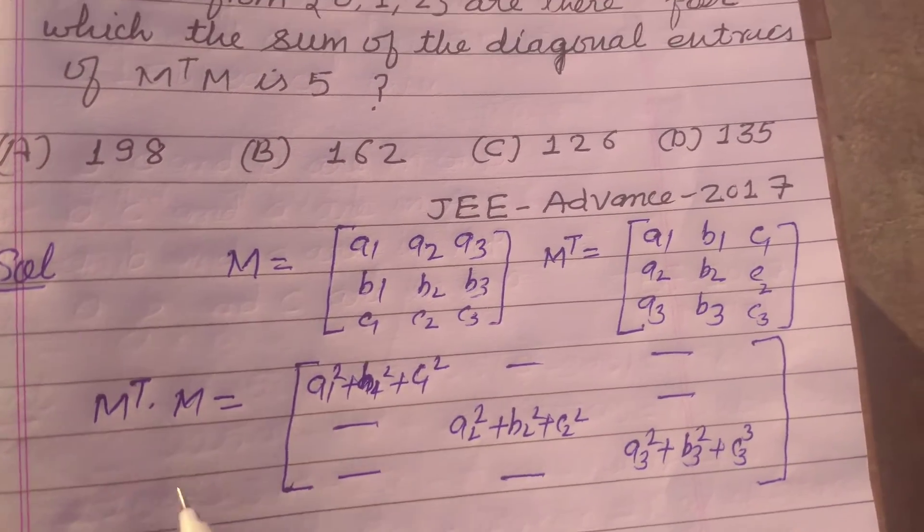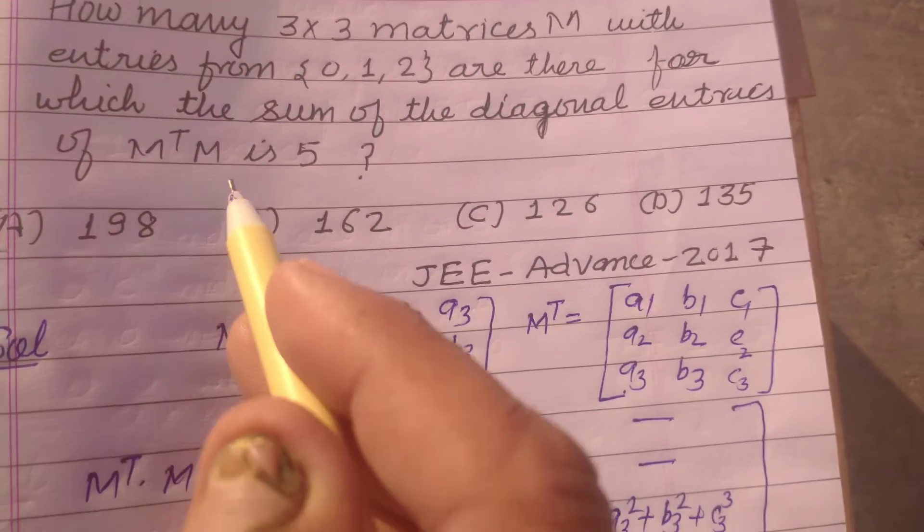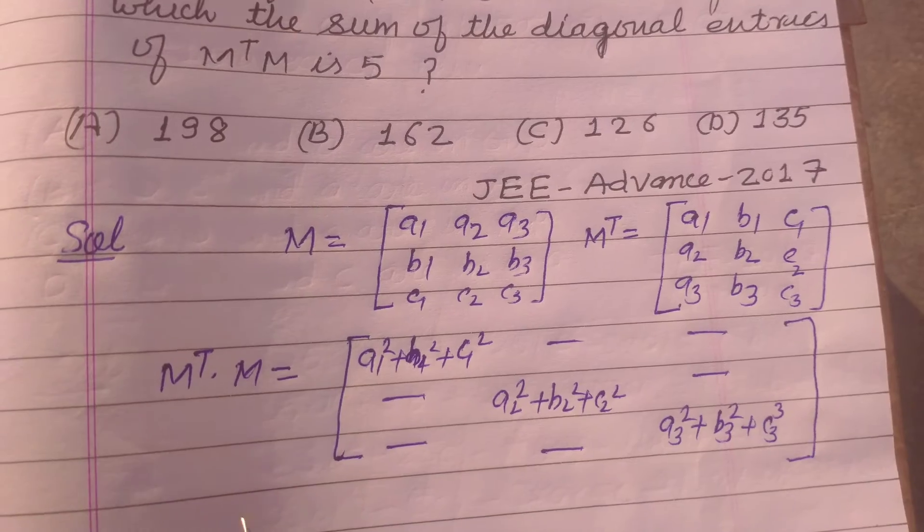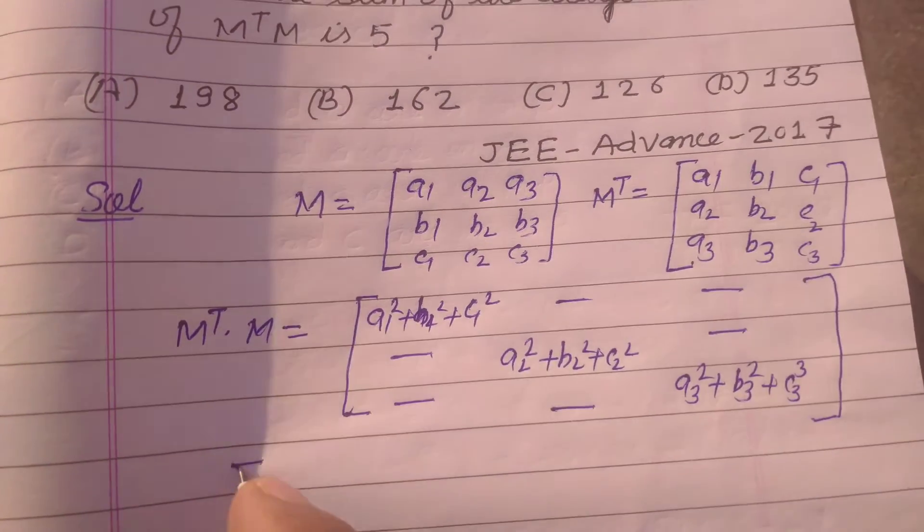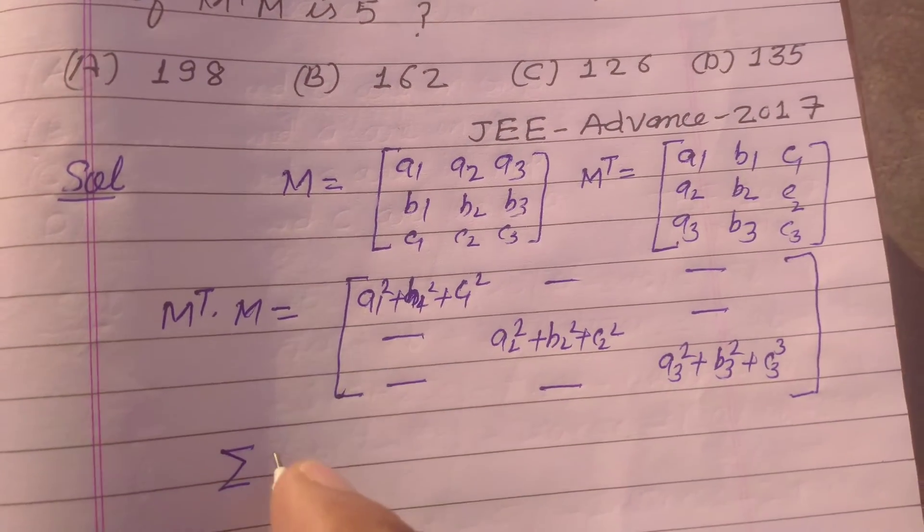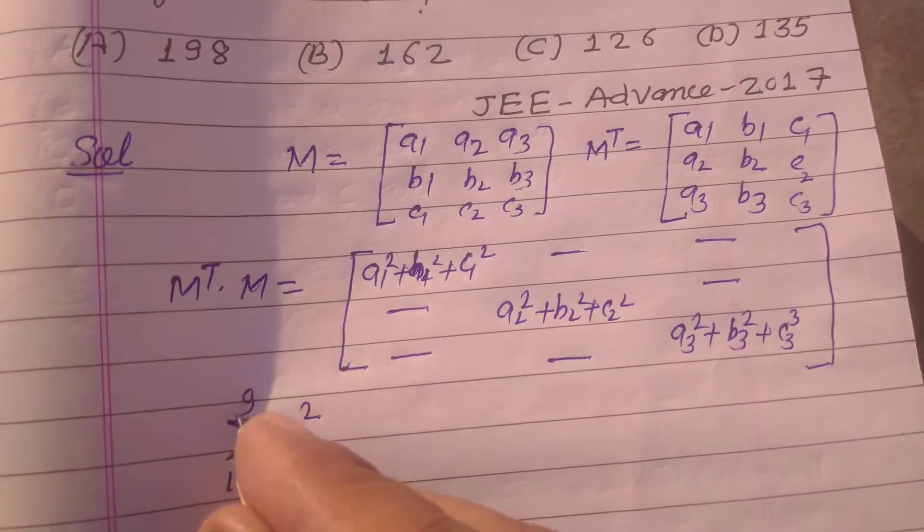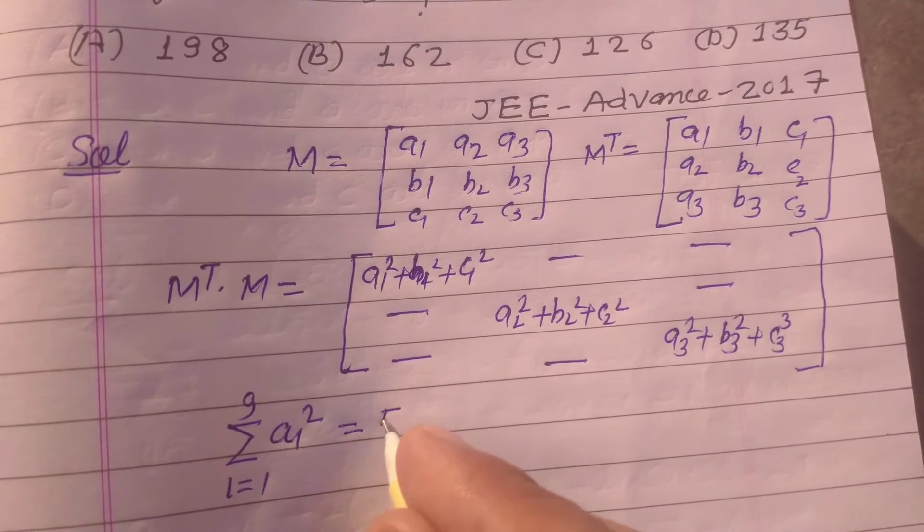So sum of the diagonal entries, the question is saying that the sum of the diagonal entries of MT into M is 5.